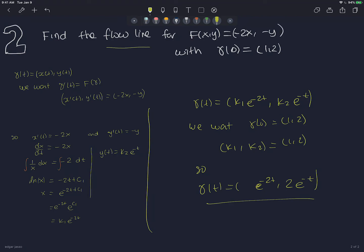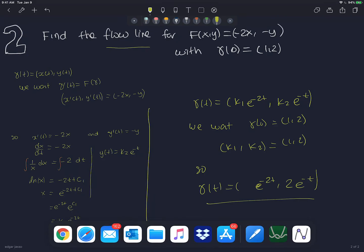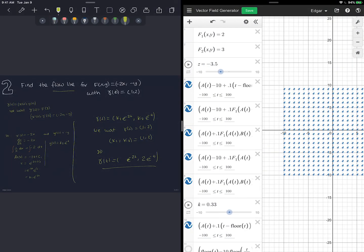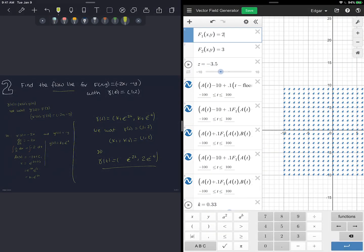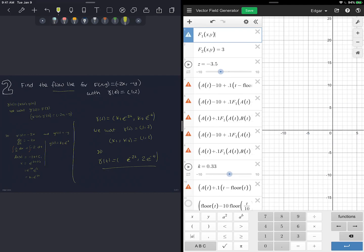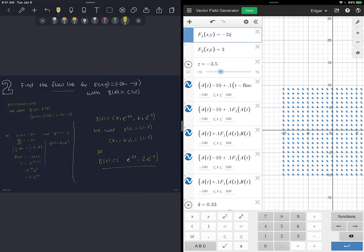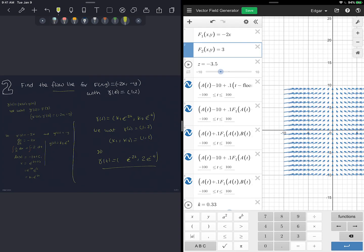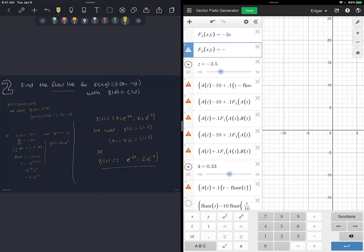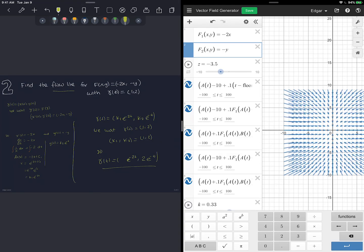So just for curiosity, let's look what the graph of this vector field looks like, just since we had the Desmos map here. So this vector field was (-2x, -y). So let me put here (-2x, -y).